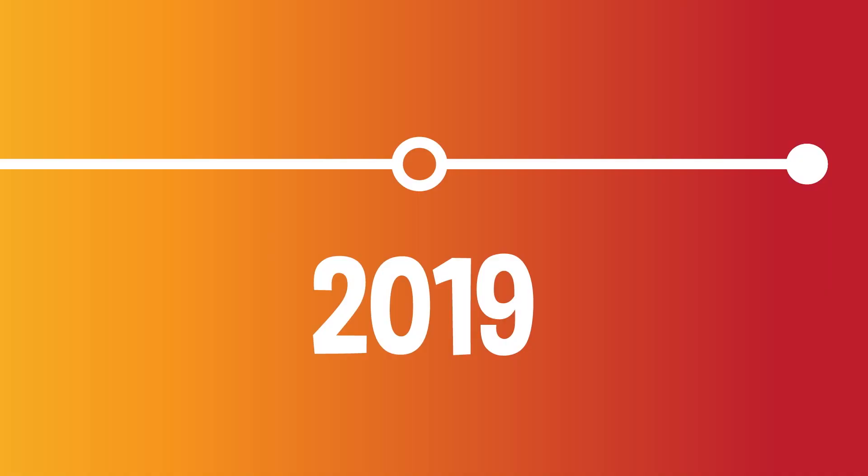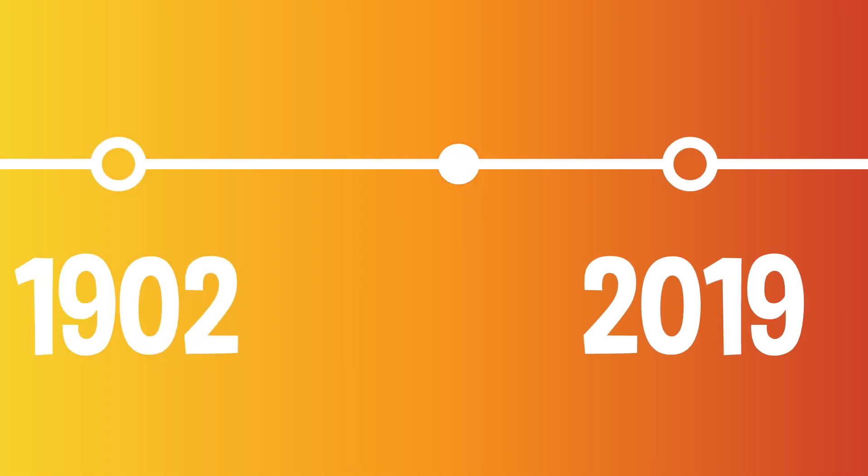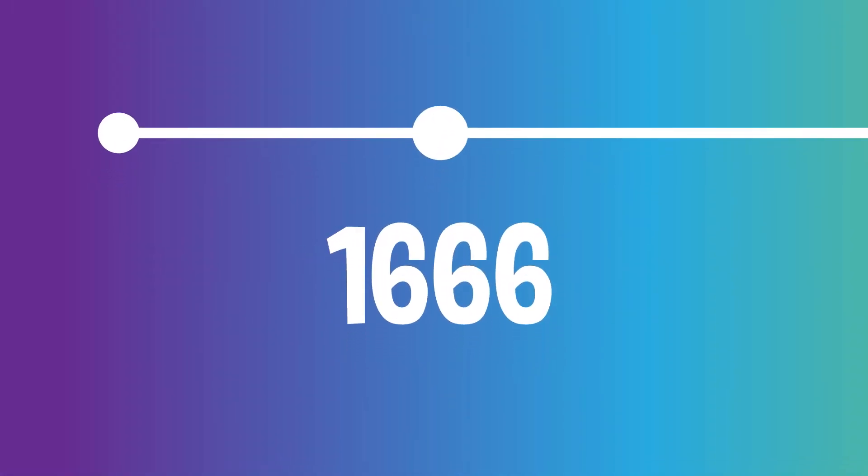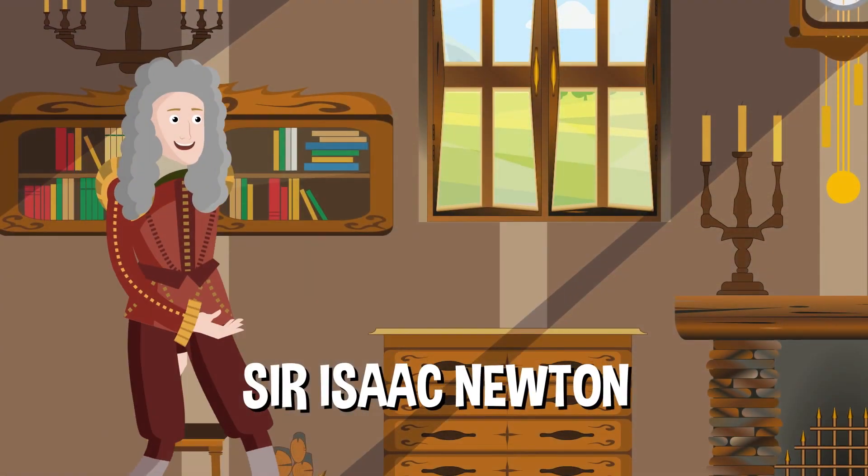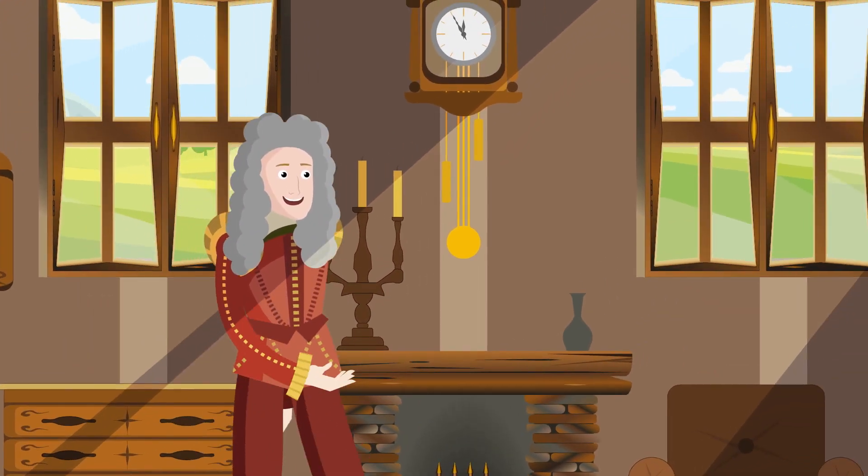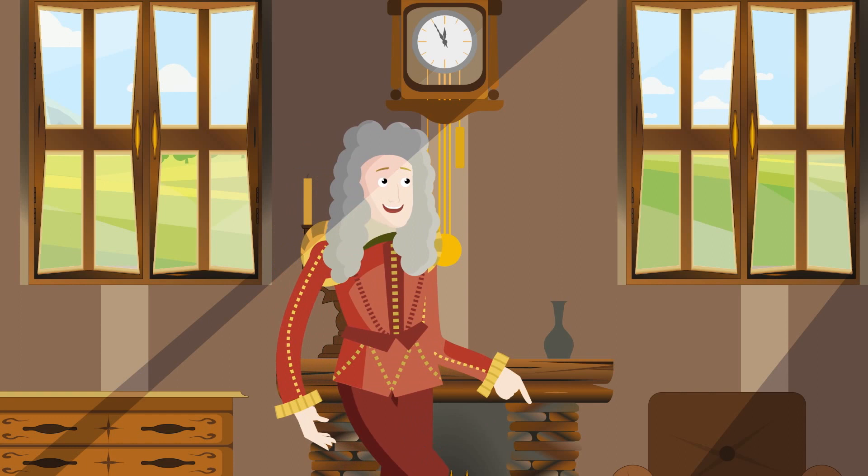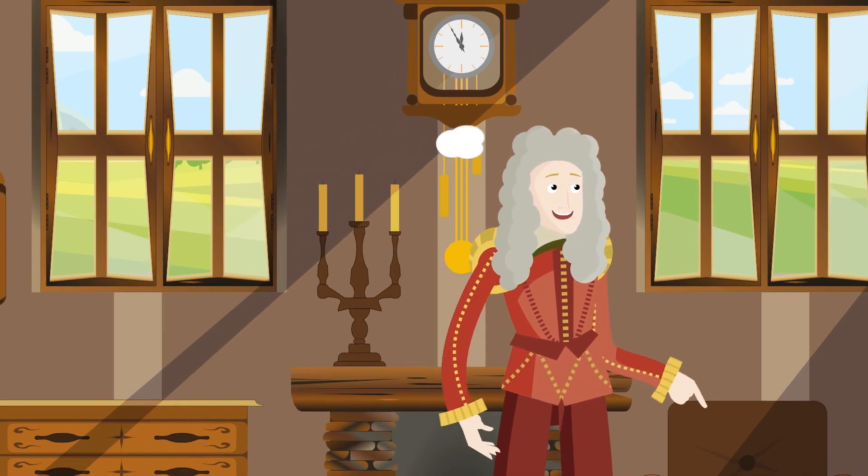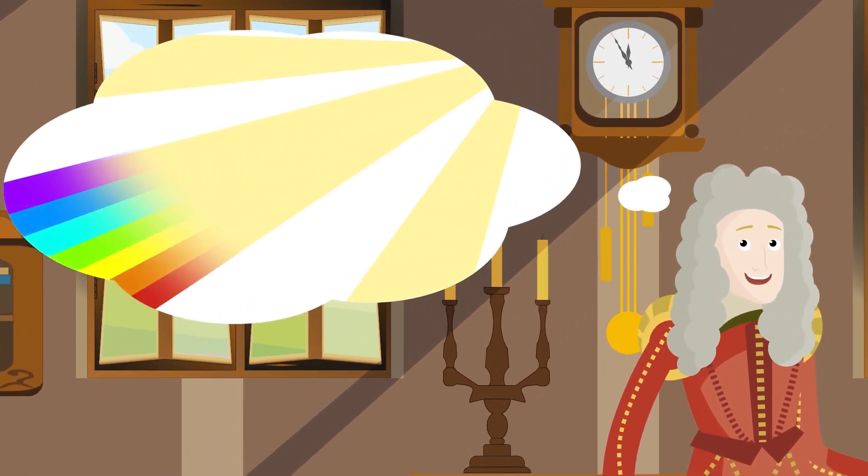In order to understand rainbows, we need to go back to the year 1666 when a scientist named Isaac Newton made an important discovery about light. He realized that the white light we call sunshine is actually made of all different colors put together.